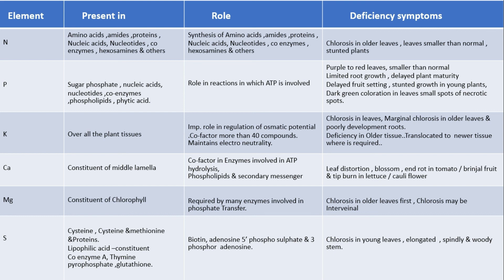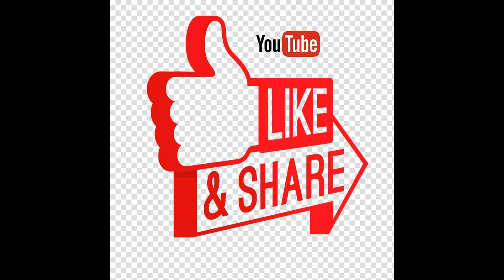Deficiency symptoms of sulfur are chlorosis in young leaves — remember, it is in young leaves, not in old leaves. In exam questions, they will ask about young versus old leaves, so you have to remember this point. Chlorosis in young leaves and elongated, spindly, and woody stem.